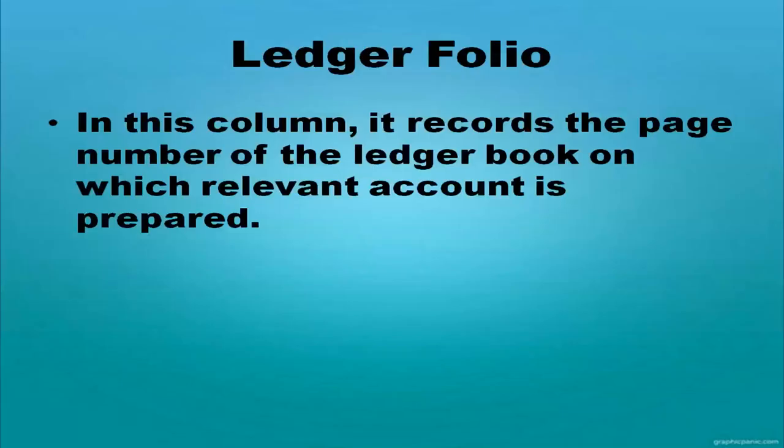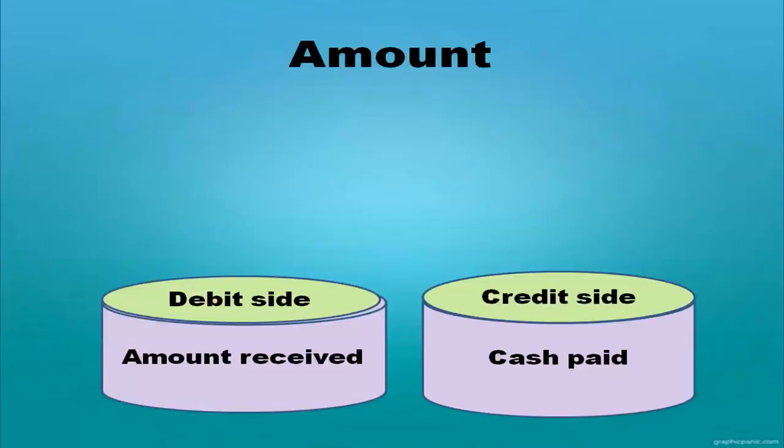The ledger folio column records the page number of the ledger book on which the relevant account is prepared. In the amount column, amount received is written on the debit side, and cash paid is written on the credit side.